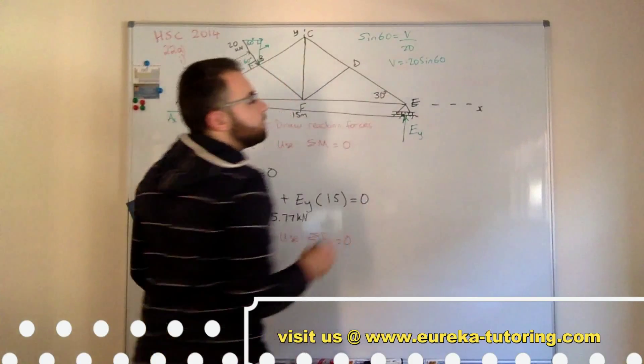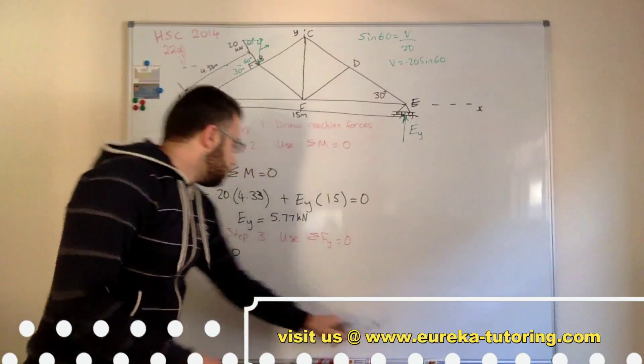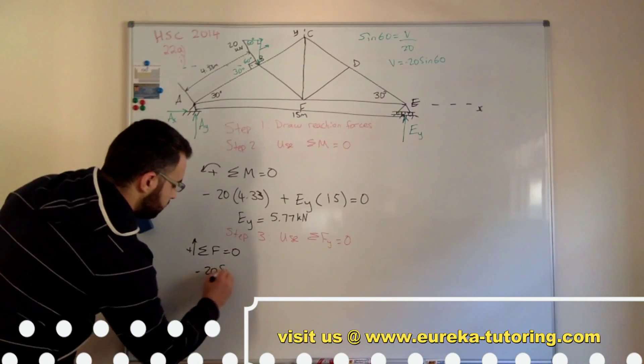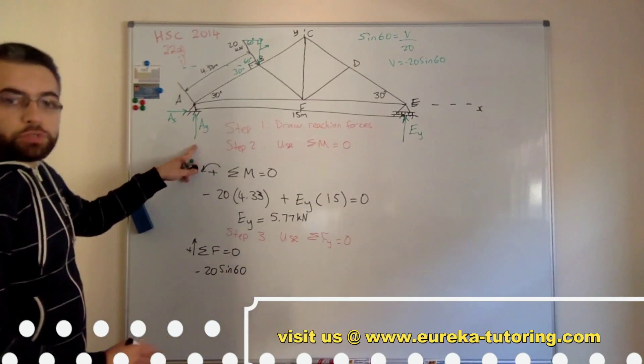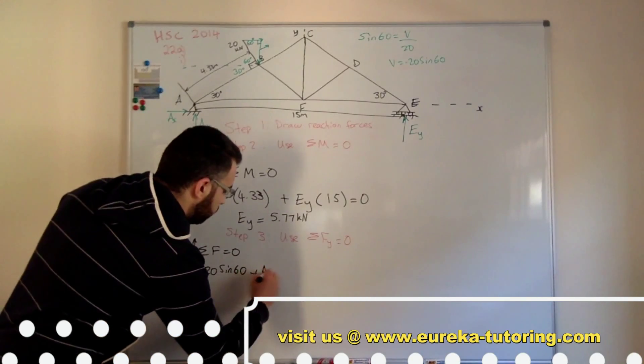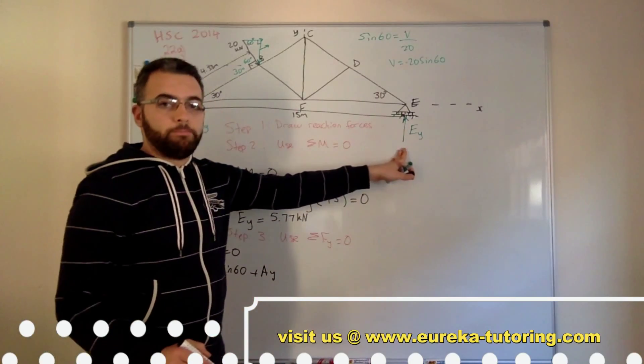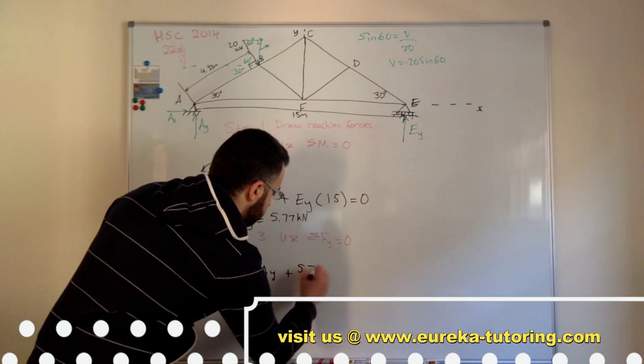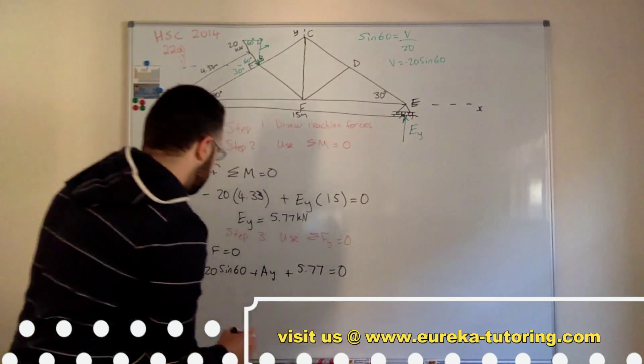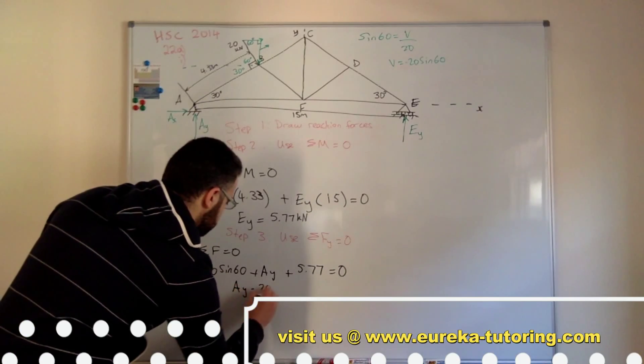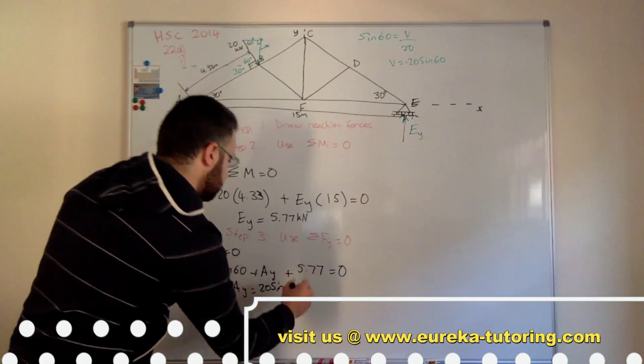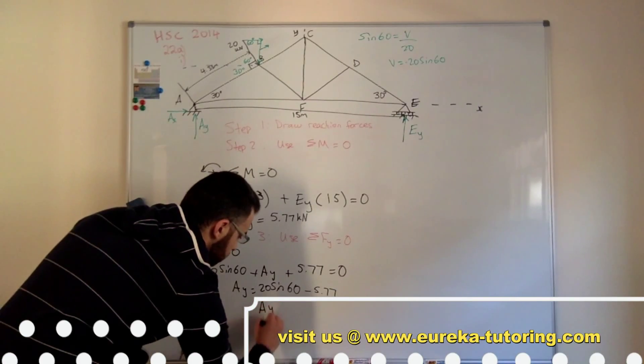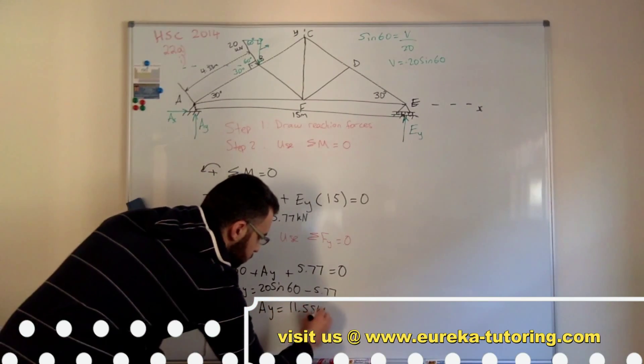So I'm going to call this negative 20 sine 60. So I can now plug it into this equation here. So I've got negative 20 sine 60. There's a vertical force here as well, which is what we want, plus AY. And the vertical of EY, which is what we already found previously, which is 5.77. Plus 5.77 equals zero. AY equals 20 sine 60 minus 5.77. And from memory, AY equals 11.55 kilonewtons.